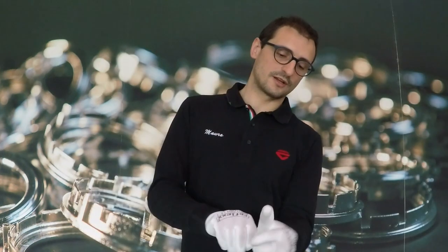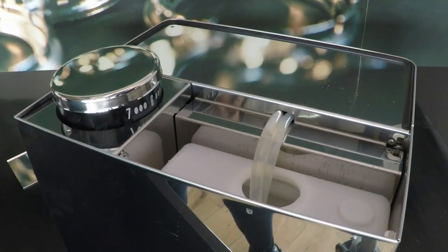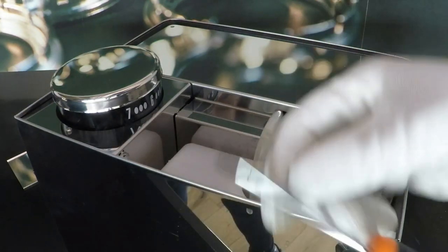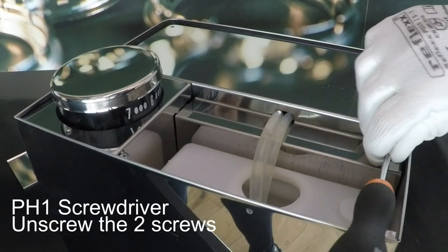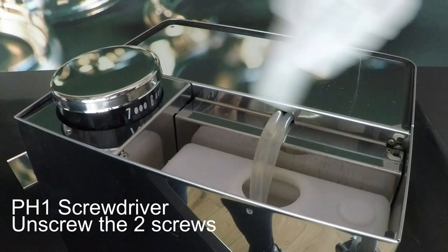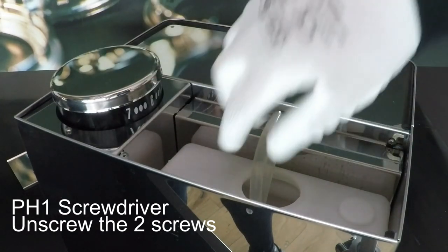Remember to use the gloves. Disconnect the machine to the power supply. Use the screwdriver PH1 to unscrew the two screws of the top of the machine and remove the water tank.